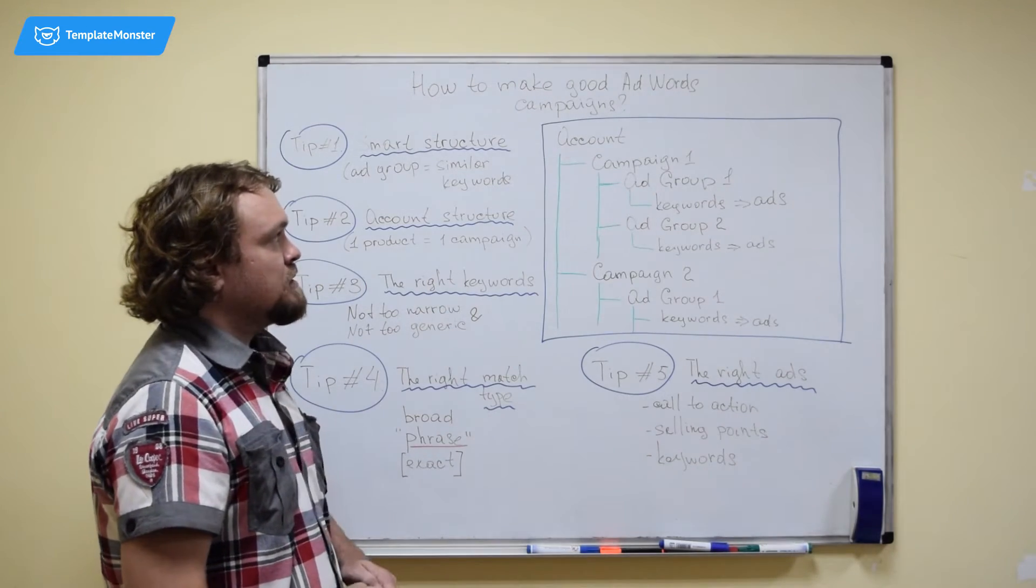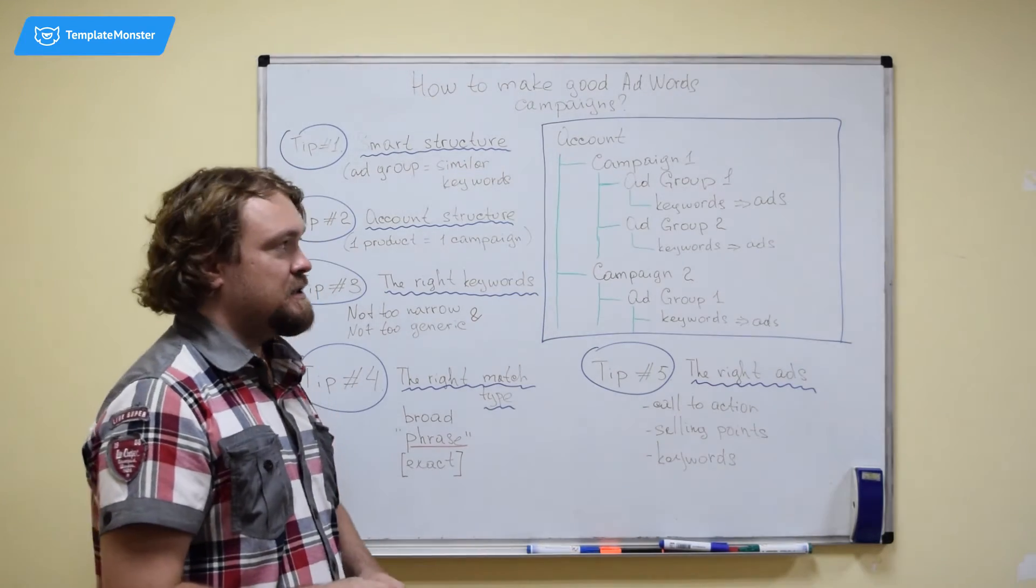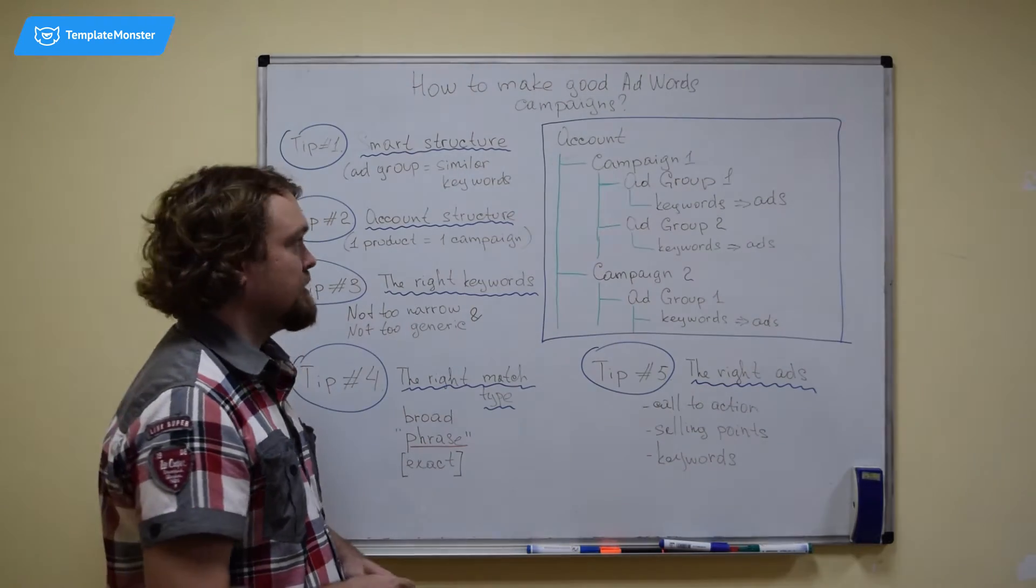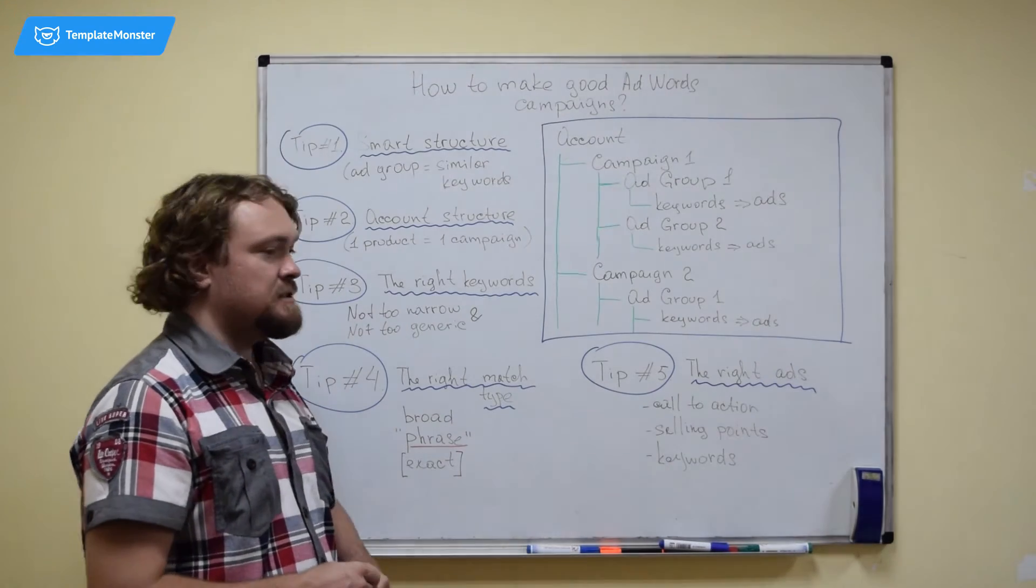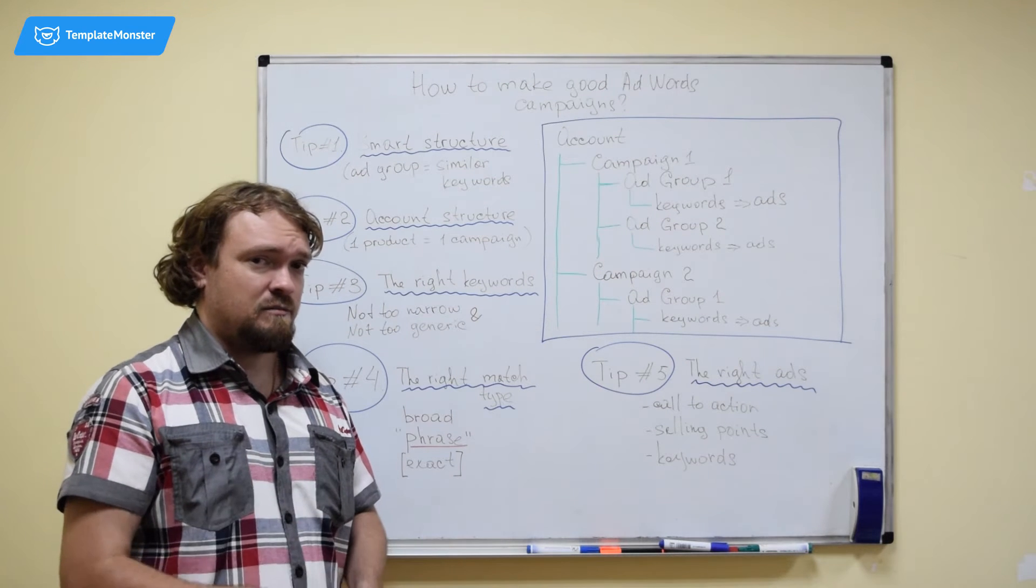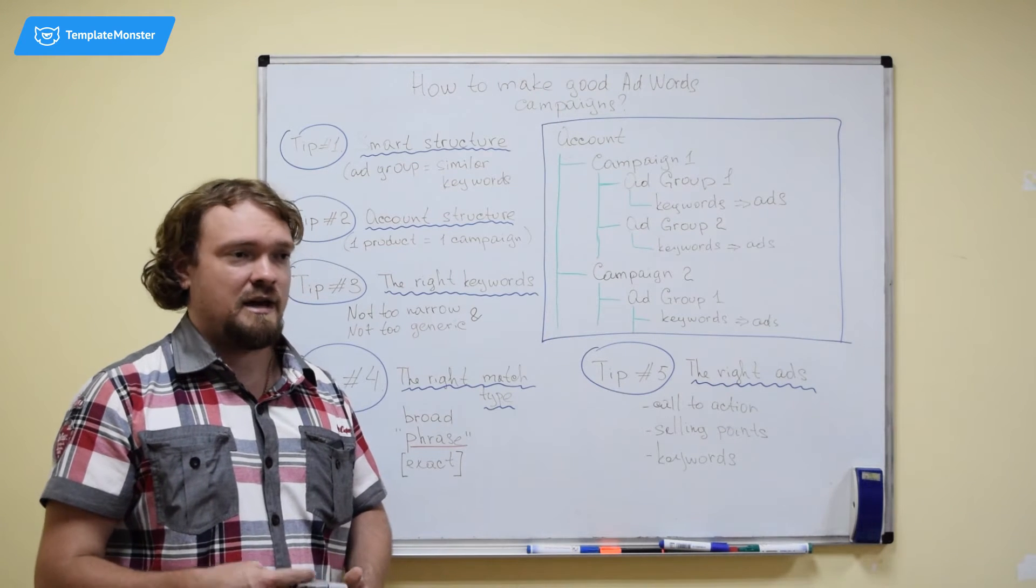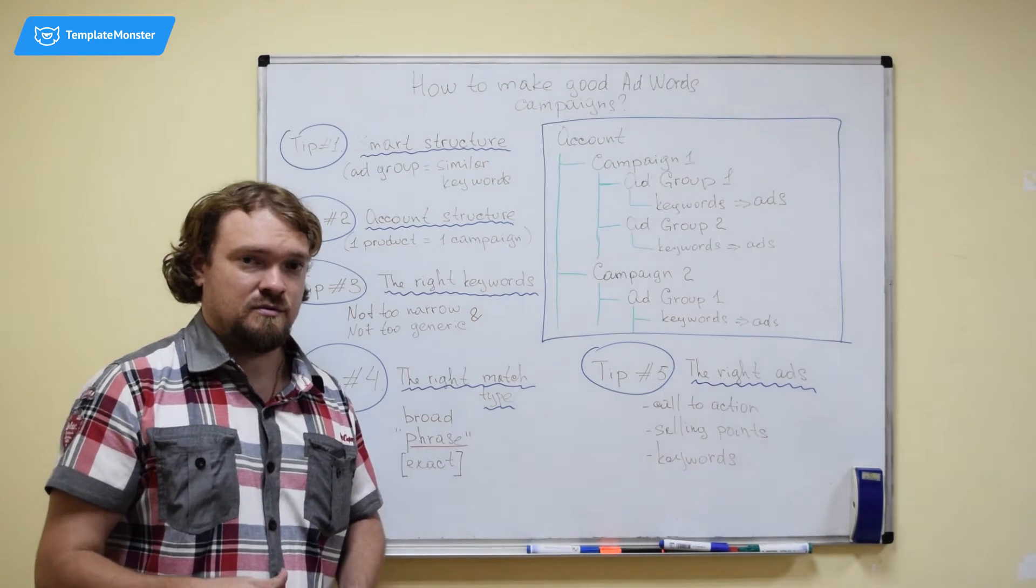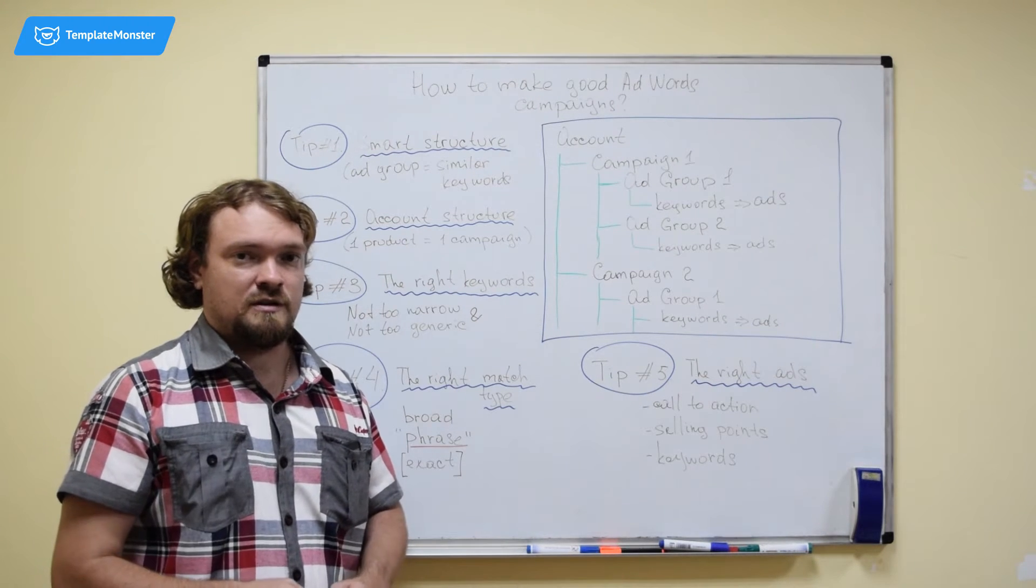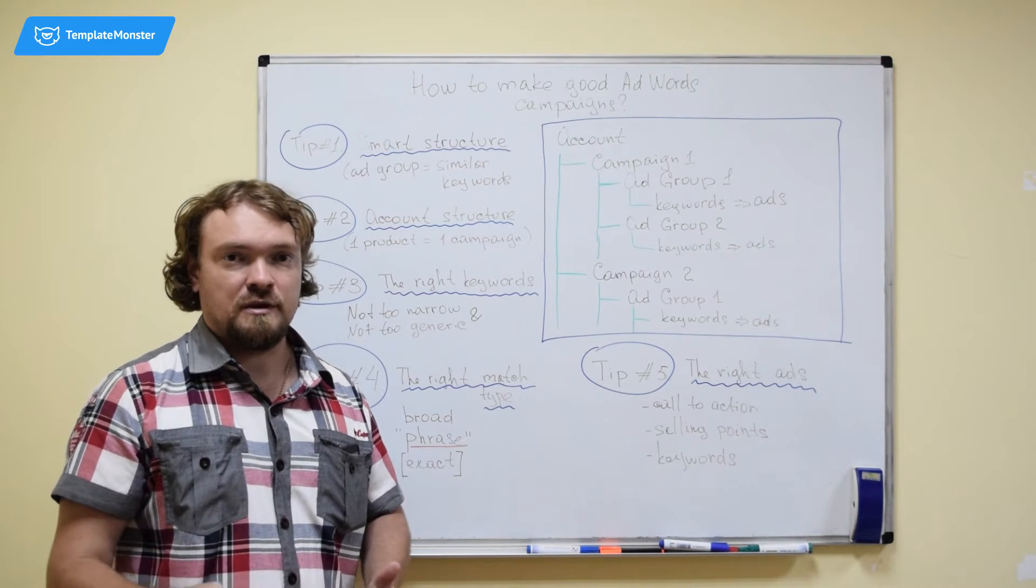And there's also an important component of AdWords success, which is the account structure. This means how you structure the campaigns in your account. The best practice here is to have one campaign for one product. If you have 10 products on your website, you're going to have at least 10 campaigns. You may have more if you want to decompose things further. But you cannot have two products in one campaign. You don't want your account to be a mess.